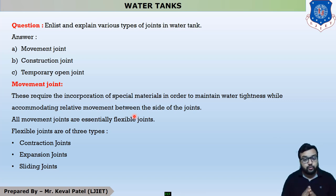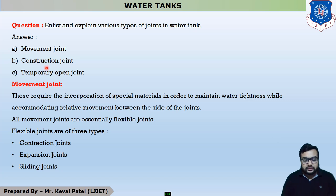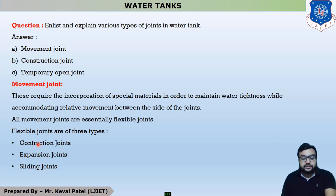Our next theory is to analyse and explain various types of joints in water tank. This theory is asked in every exam paper, whether regular or remedial. There are mainly three types of joints: first is movement joint, second is construction joint, and last is temporary open joint. In movement joint, there are three types: contraction joint, expansion joint, and sliding joint. Now we are moving further to contraction joints.